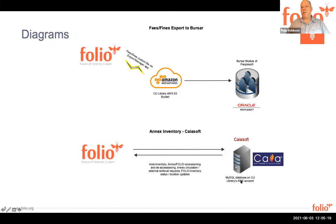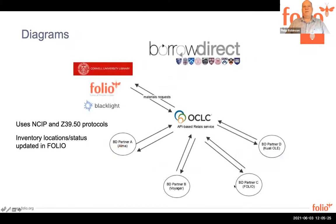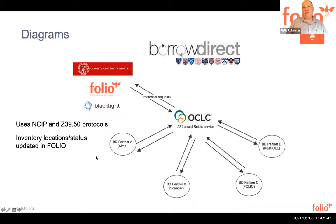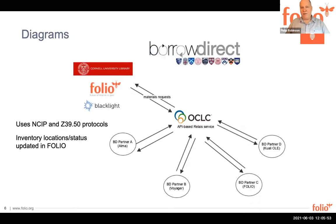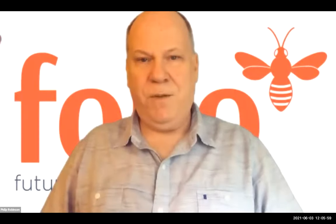For KaiSoft Annex Inventory, it uses the mod-inventory module for accessioning, deaccessioning, circulation, external retrieval requests, and updates of Folio inventory and location — it does a lot of work. We have a MySQL database in our AWS account that KaiSoft operates. And last, the most complex one: BorrowDirect. This is meant to show how different partners use different ILS systems. We're using NCIP and Z39.50 protocols and Blacklight for discovery and access, synchronizing inventory locations, statuses, and request statuses using Relay with OCLC. I went really fast, so I'm happy to answer questions at the end if there's time.